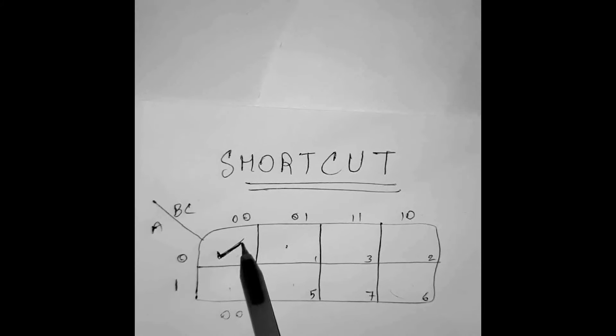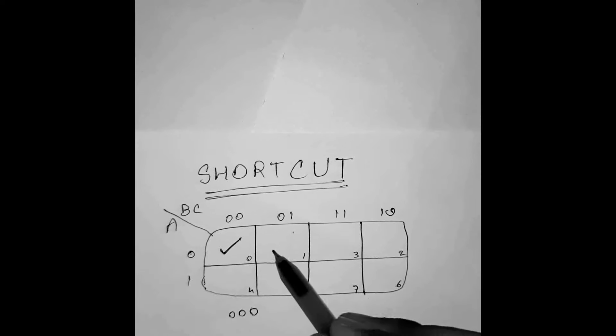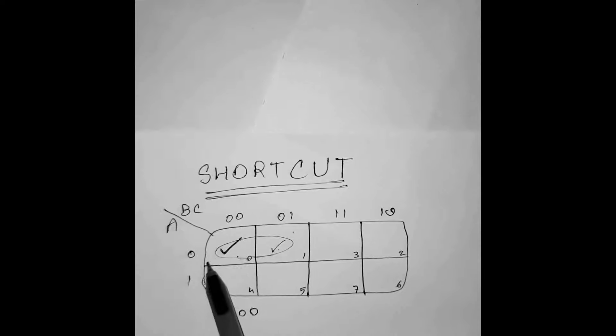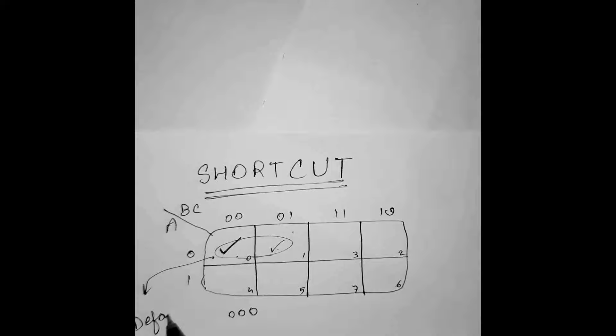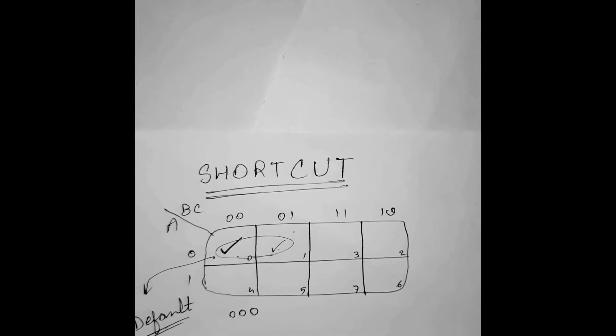So for G0 is equal to F0, this box, for G1, this and this box is present. We form a pair here. Because this is default. Let me write it down. Default.